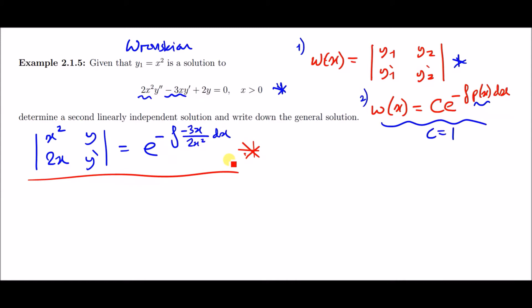Let's go ahead and evaluate this. On the left hand side we got a two by two matrix and we need to compute the determinant. Determinant simply means we're going to do x squared times y prime minus y times 2x. Doing that is simply x squared y prime subtract 2xy. So far looks like a first order ODE.